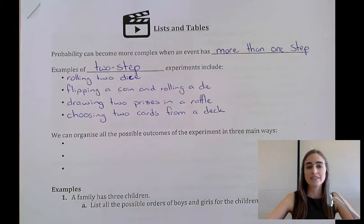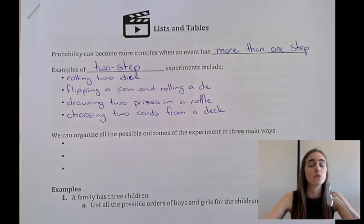In this video, I want to have a look at lists and tables with probability. We've been looking at calculating probabilities in earlier lessons, but probability can become more complicated when an experiment has more than one step to it, or more than one stage.